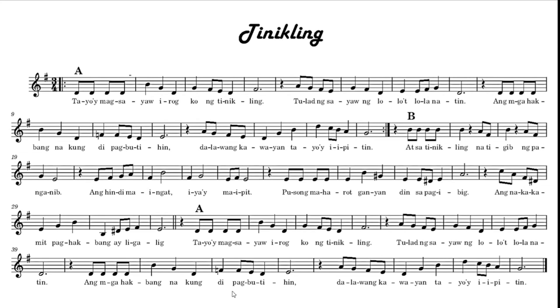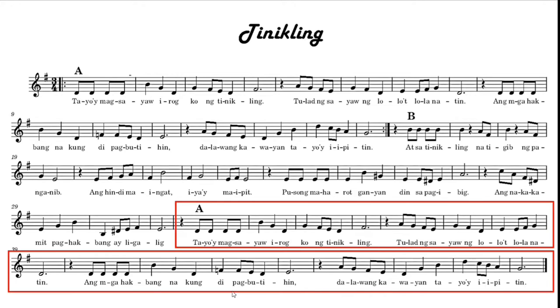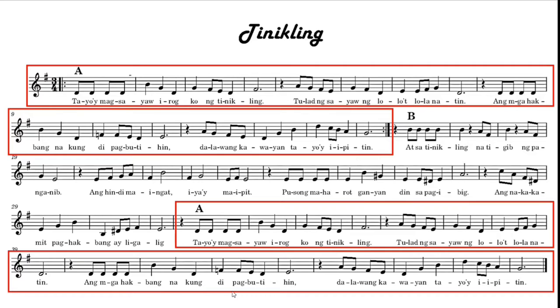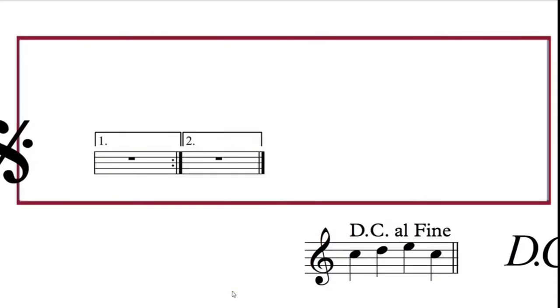You have learned that some songs have repeated parts. Take for example the song Tinikling. This song is in ABA form, where the third section is just a repetition of the first section. To avoid writing repeatedly the first section and to shorten the score, composers use repeat marks.